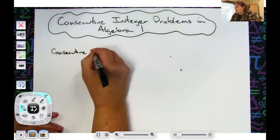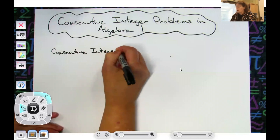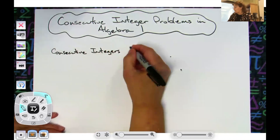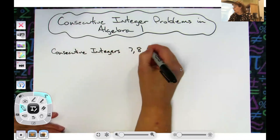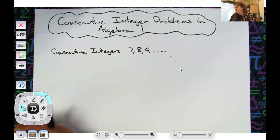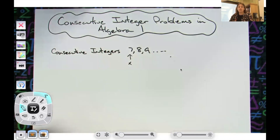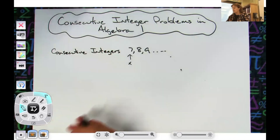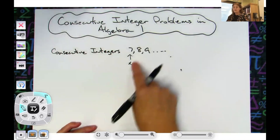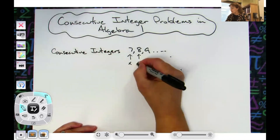So we're going to have consecutive integers first. An example would be 7, 8, 9 — those are consecutive integers because one comes right after the other. Now if I let X be my 7, what would I have to do to get to the next consecutive integer? Well, I would take X and add 1 to it, so that would be X plus 1.